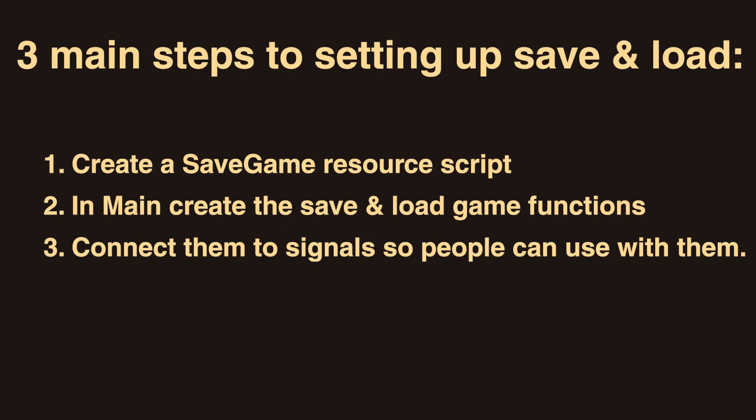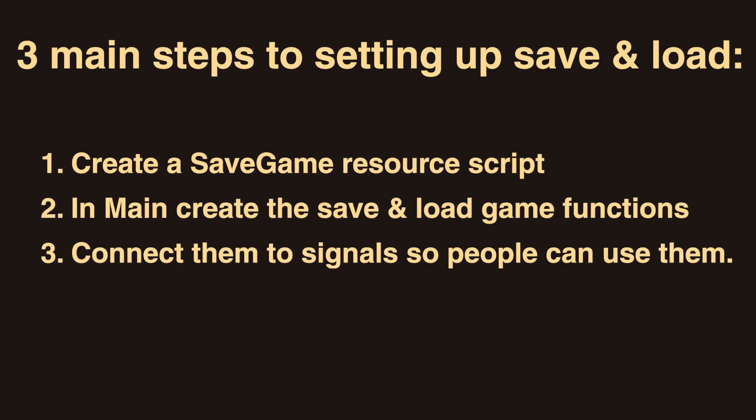There are three main steps to setting up the save and load system. One: create a save game resource script. Two: in your main, create the save and load game functions. And three: connect them to signals so that people can actually use them. I'll be running through these steps in more detail now. All of the code is in the GitHub link in the description, organized into the chapters of this video.